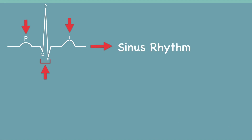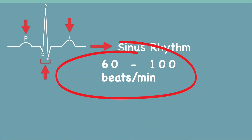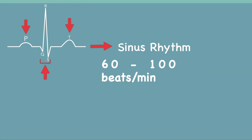A sinus rhythm requires organized electrical activity that initiates at the sinus node. In adults, normal sinus rhythm usually accompanies a heart rate of 60 to 100 beats per minute. However, normal heart rate may vary from person to person. Normal sinus rhythm is defined as the rhythm of a healthy heart, meaning the electrical impulse from the sinus node is being properly transmitted.